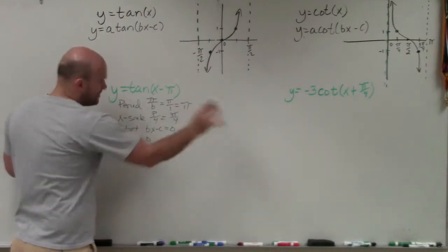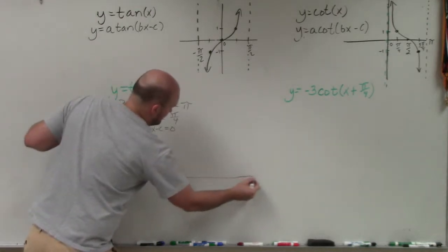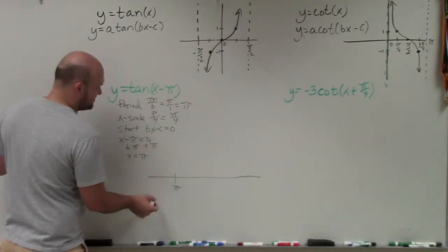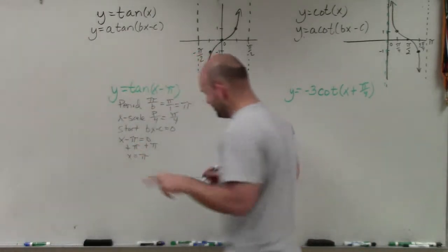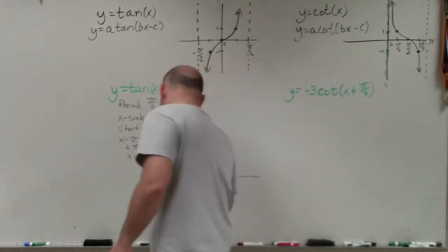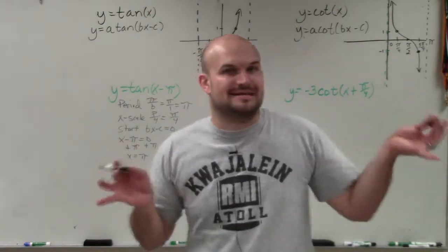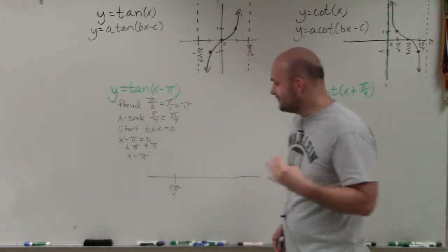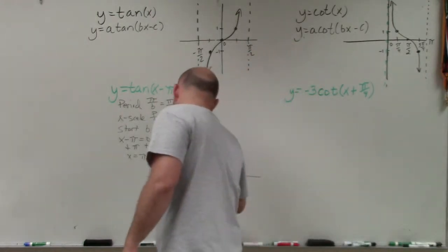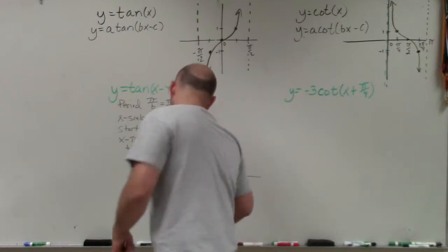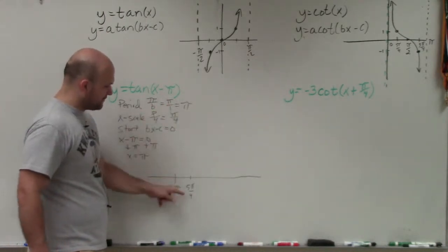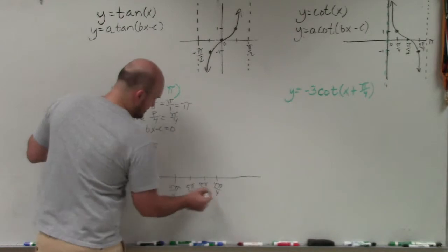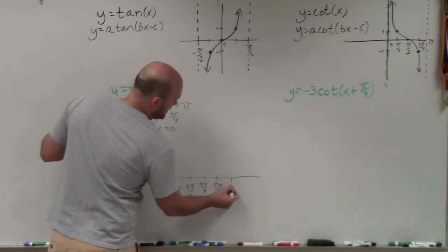So if I'm going to graph this, I'm going to do two periods to the right. Here is pi. The y-axis is not at pi. Looking at our x scale — the best thing I like to do is rewrite pi as 4 pi over 4. That way, we're going to be adding pi over 4 each step. So from 4 pi over 4, adding pi over 4 gives 5 pi over 4, then 6 pi over 4, then 7 pi over 4, then 8 pi over 4.